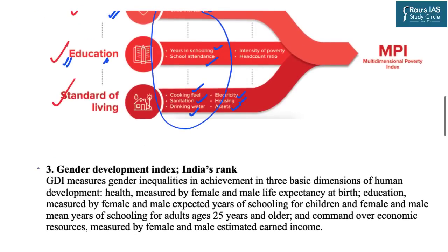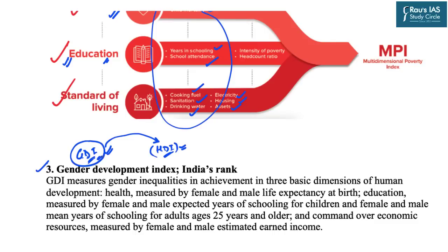Next comes the Gender Development Index, i.e. GDI. This was an improvement over the Human Development Index because HDI indicated the average developmental level of a population, but from it we could not understand the inequality levels in the developmental patterns of males versus females. So UNDP started the Gender Development Index — similar to HDI but focused on women. In layman's language, when you measure HDI separately for females, it becomes the GDI.